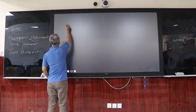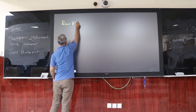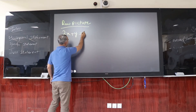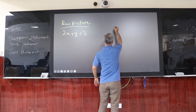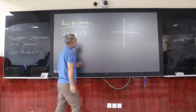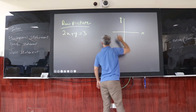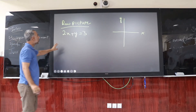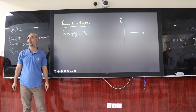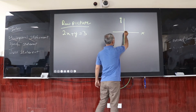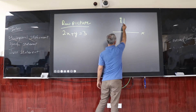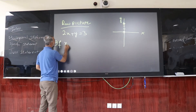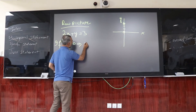For the row picture, consider the first equation: 2x plus y equals 3. We set up a graphical formation with an x-axis and y-axis. From inspection, for x equal to 0, what is the value of y? When x is at 0, y equals 3, giving us the point (0, 3).